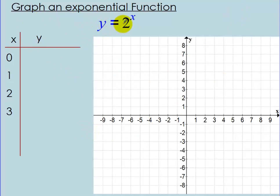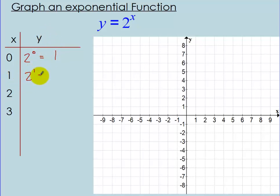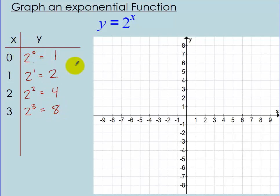For example, I want to graph y equals 2 to the x power. I'll make an xy table starting with x values 0, 1, 2, and 3. For x equals 0: 2 to the 0 power is 1, so y equals 1. For x equals 1: 2 to the 1 power is 2. For x equals 2: 2 squared is 4. For x equals 3: 2 cubed is 2 times 2 times 2, which is 8.